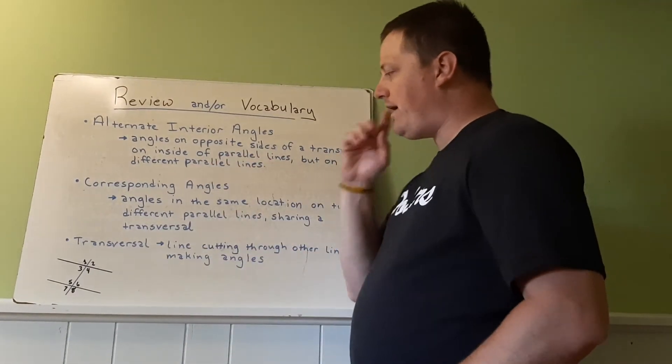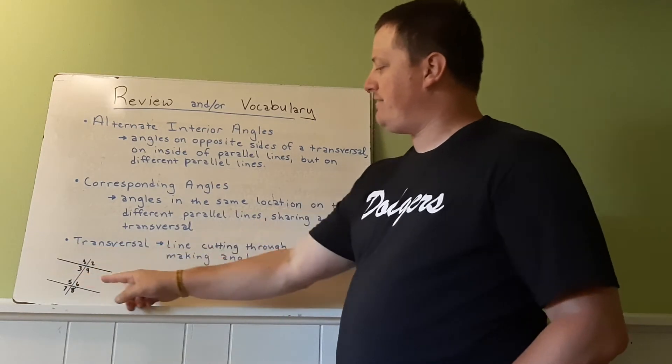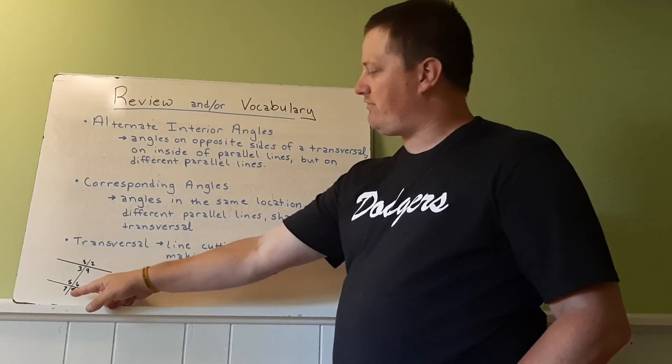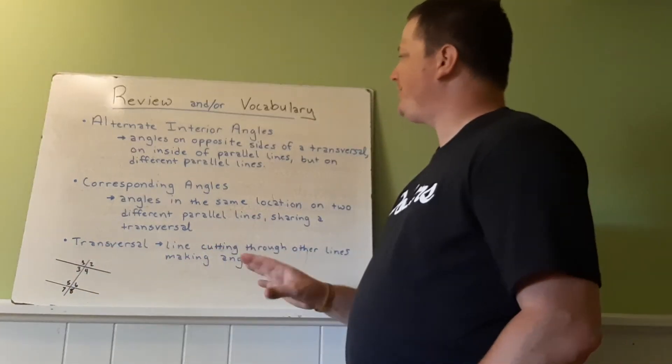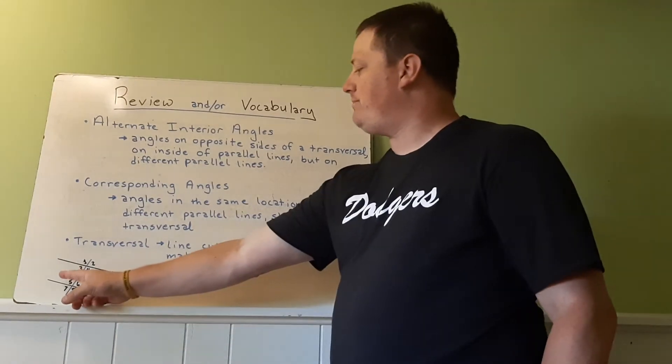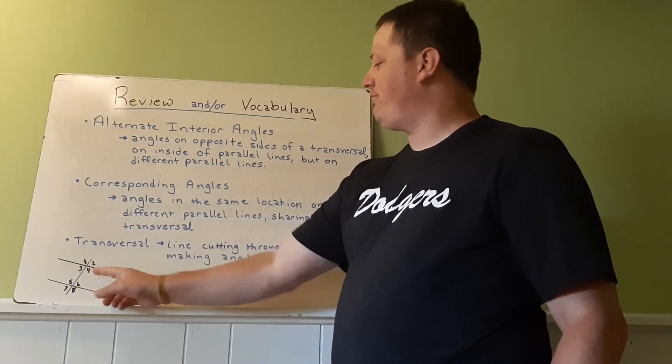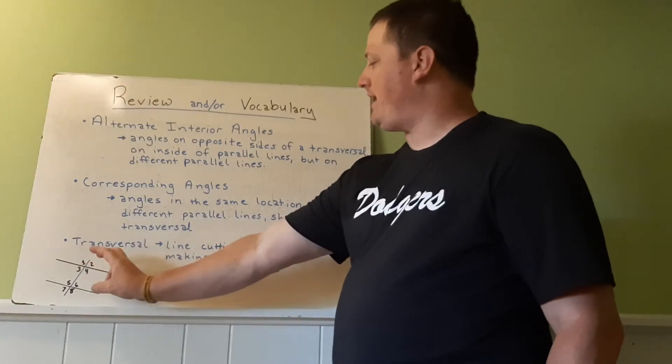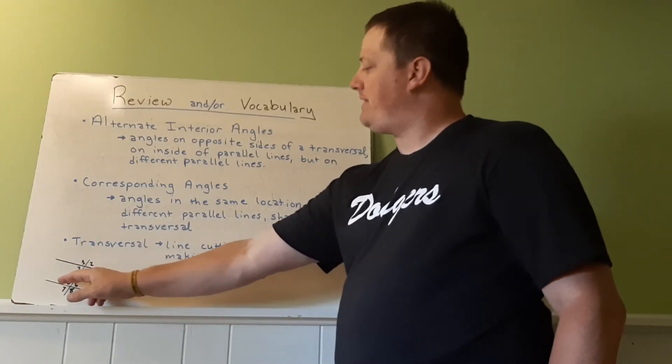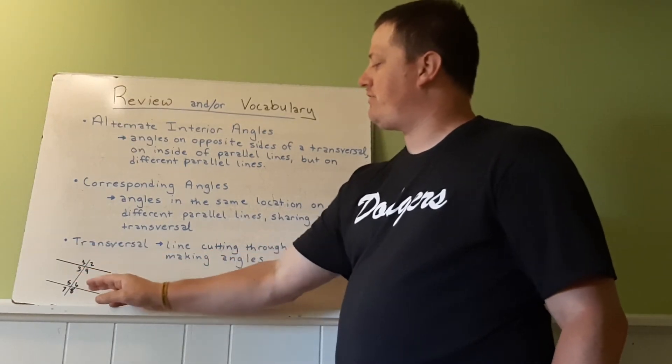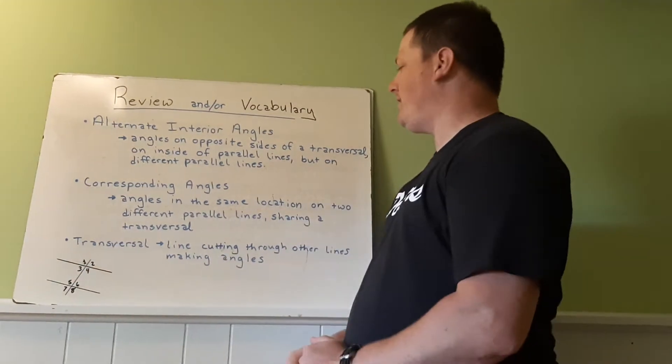So here, what we have is we have two parallel lines in black, and we have a transversal in blue. So alternate interior angles would be like angle five and angle four, where they are both on the inside of the parallels, but they are on opposite sides of the transversal, and they're on different parallel lines.